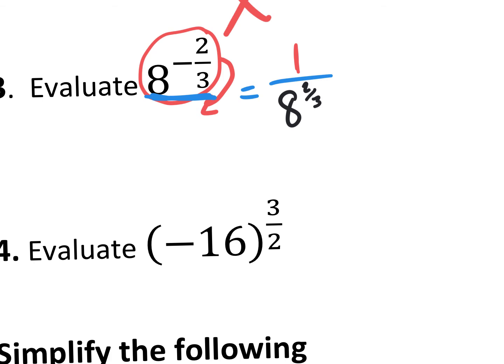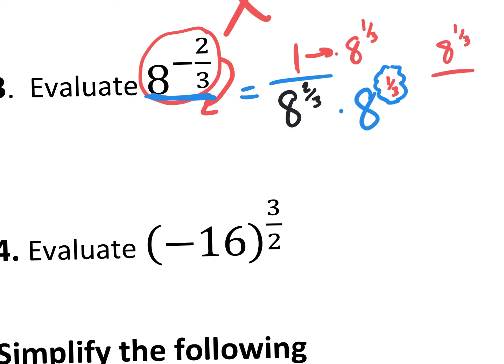We do not want to leave a rational exponent in the denominator because a rational exponent is technically a radical — this is the third root of eight squared. We need to multiply by eight to a certain power so that when combined with two-thirds, it becomes one whole. That power is one-third. So we multiply top and bottom by eight to the one-third. On top: one times eight to the one-third is eight to the one-third. On the bottom: two-thirds plus one-third gives eight to the three-thirds, which is just eight.